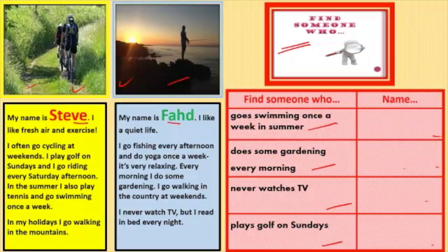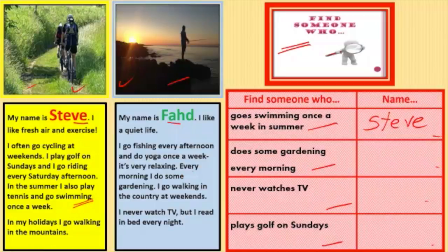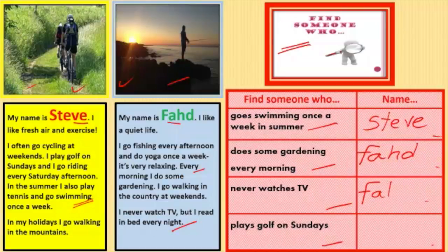Let's check our answers. Someone who goes swimming once a week in summer — that is Steve, so I will write Steve here. Someone who does some gardening every morning — that is Fed. Someone who never watches TV — that is again Fed. Finally, someone who plays golf on Sundays — that is Steve. Excellent job!